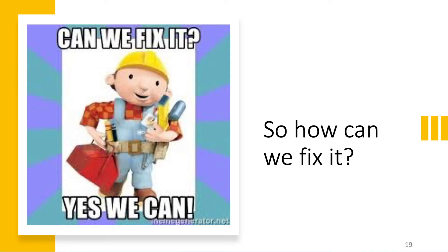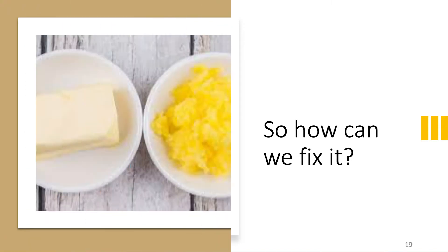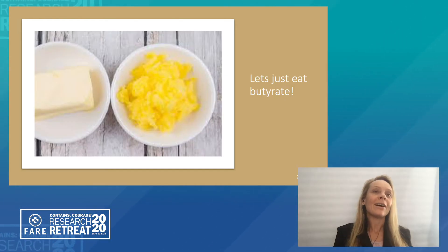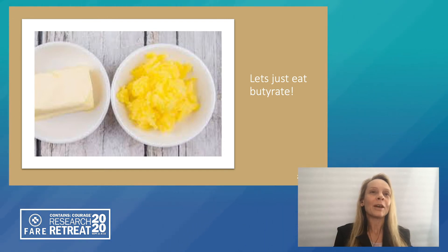Now we know the microbiome is important, and that reduction of butyrate may be important in prevention of food allergy and perhaps tolerance development. How can we fix it? The simple answer as a dietitian is: let's just eat butyrate. But once again, it's not a simple answer because the foods that seem to be high in butyrate are butter and ghee. We also know that a diet high in saturated fats negatively affects the gut microbiome diversity, so it is a bit of a catch-22 situation.